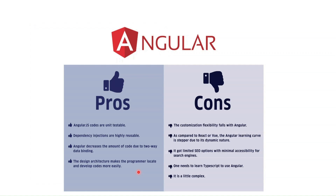Now let's look at the pros and cons. Pros: Angular code is highly testable — you can test each piece of code without needing to compile the entire codebase. Dependency injection is a highly reusable design pattern in the programming world and is a core part of Angular. Angular also decreases the amount of code needed due to two-way binding, which is a really great feature. The design architecture makes it easier for developers to write and locate code.